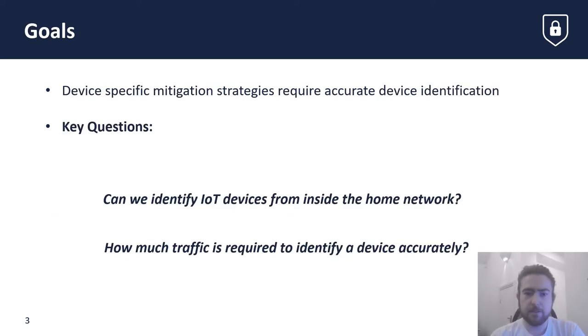The first step towards implementing device-specific mitigation strategies is accurate device identification. By understanding which IoT product the traffic belongs to, we can implement mitigation strategies on a device-specific level, meaning improved privacy, accuracy and reliability.